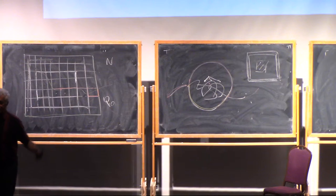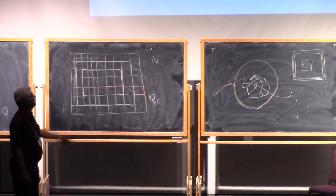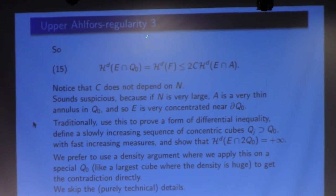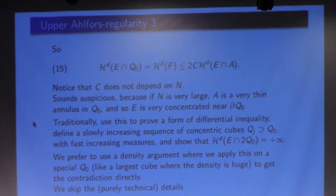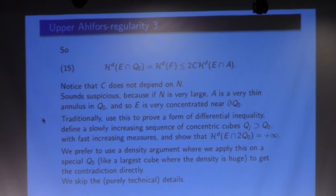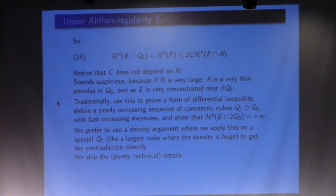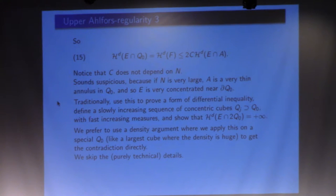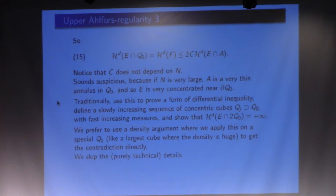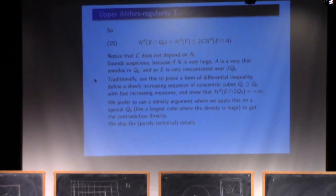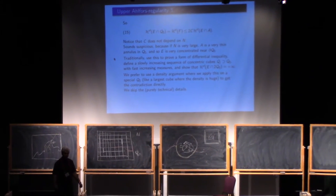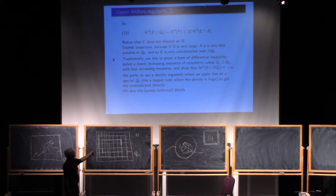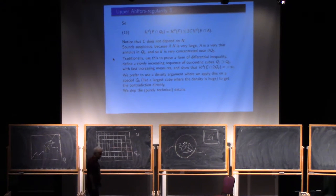I'm saying all those things to convince you that once we have the estimate up there, we're in business. But I don't want to be more precise than that, because it's just playing games, and the right way I claim to play the game is to choose your initial cube Q0 correctly at the first place and get the contradiction immediately. The hint for choosing the best Q0 would be: take the cube which is as large as possible with a huge density, and saying if it was as large as possible, you get the contradiction immediately. You should not expect that most of the mass is near the boundary.